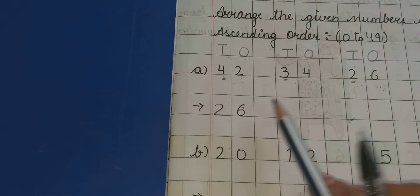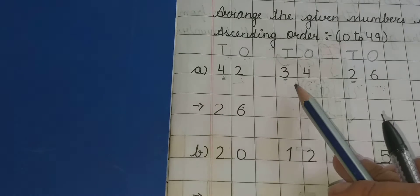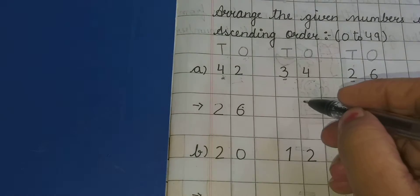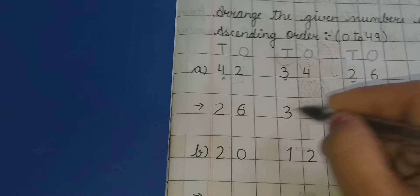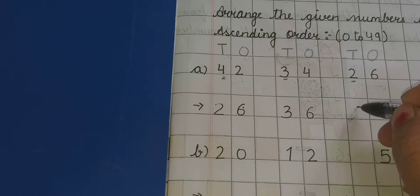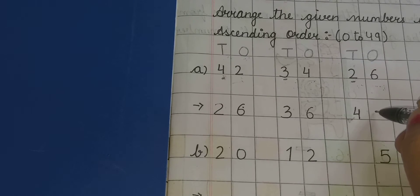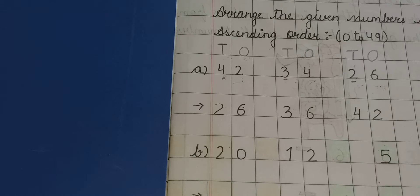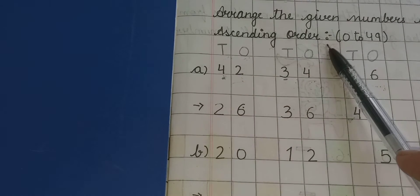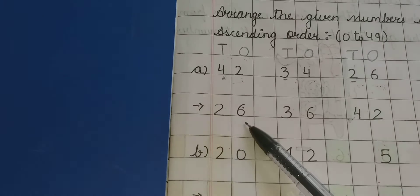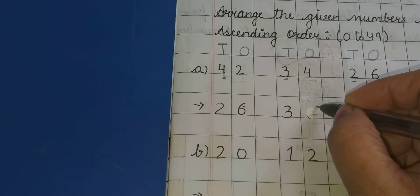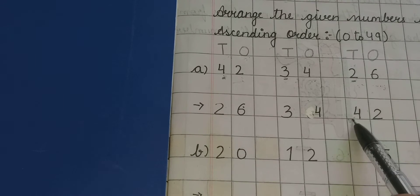Now, अब आप 4 and 3 में compare करें. 4 and 3 में smallest number कौन सा है? Number 3. So 3, 4 — 34 आएगा 26 के after. क्या number बचा? 4, 2 — 42. Write down: 4, 2 — 42. So kids, look here — numbers arranged in ascending order: 26, 34, 42. Sorry kids, correction: it's 3, 4 — 34. And 4, 2 — 42.